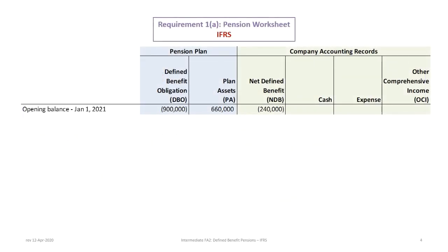Let's start with the pension worksheet. What we have here are a series of six different accounts or columns. The area in blue are on the trustee books only — these are not on the company books and are also known as memorandum accounts. Even though the company has a defined benefit obligation or DBO, that's actually not on the company's balance sheet as a liability, and the plan assets are also not on the company's balance sheet — those sit with the trustee. What is on the company's records are the net defined benefit, cash, any expense, and other comprehensive income, which is applicable to IFRS only.